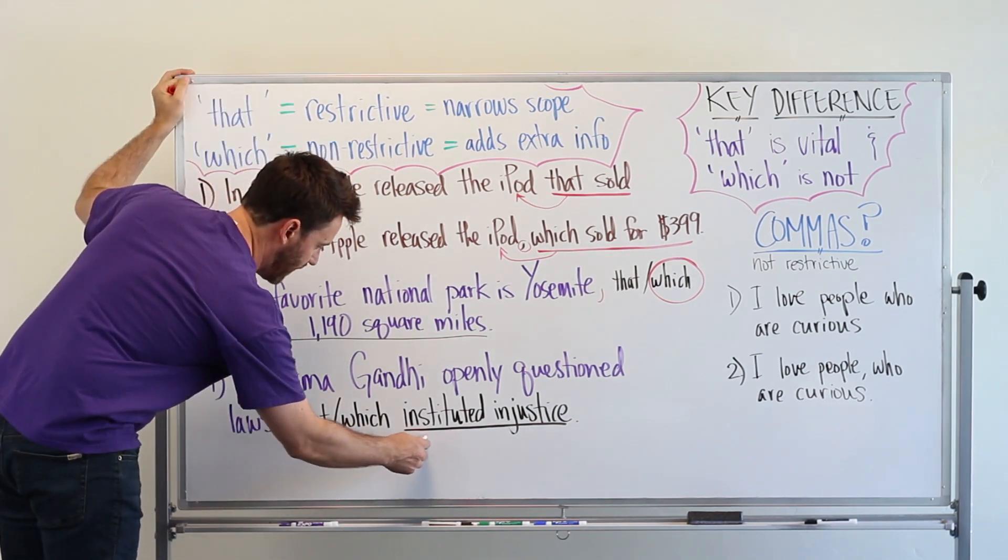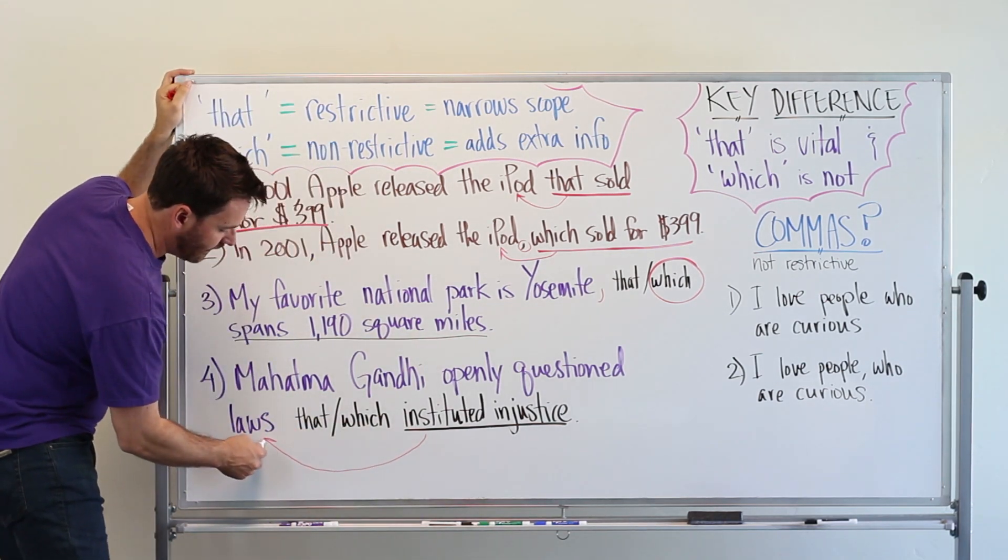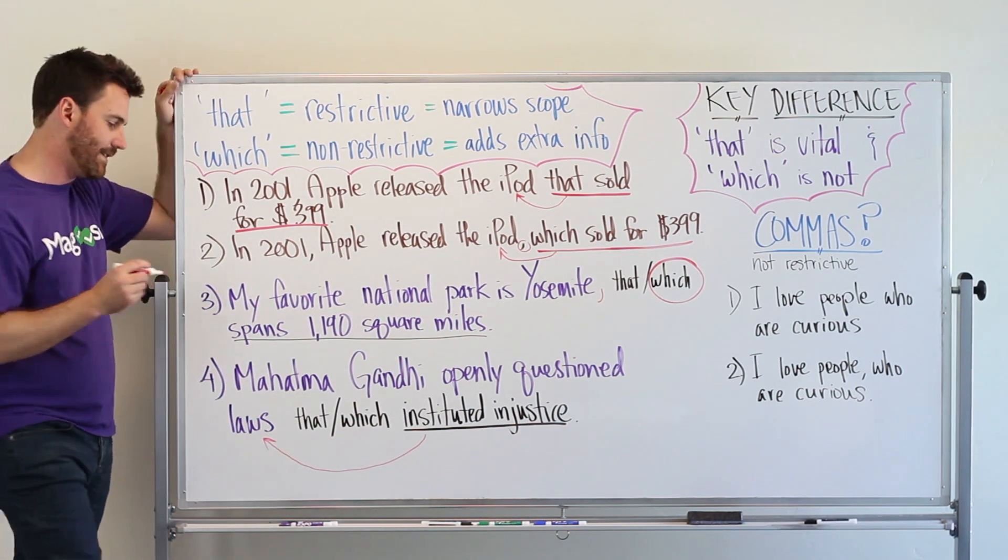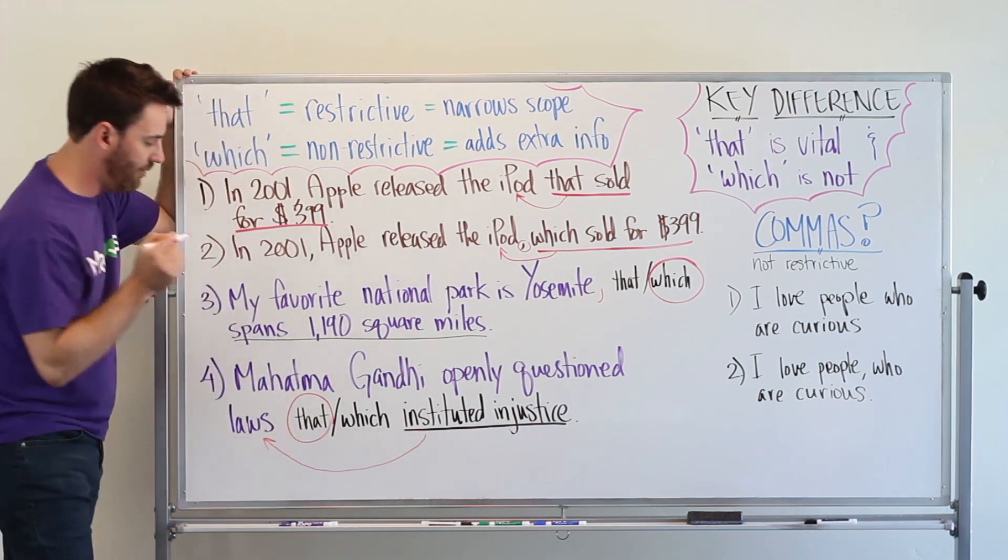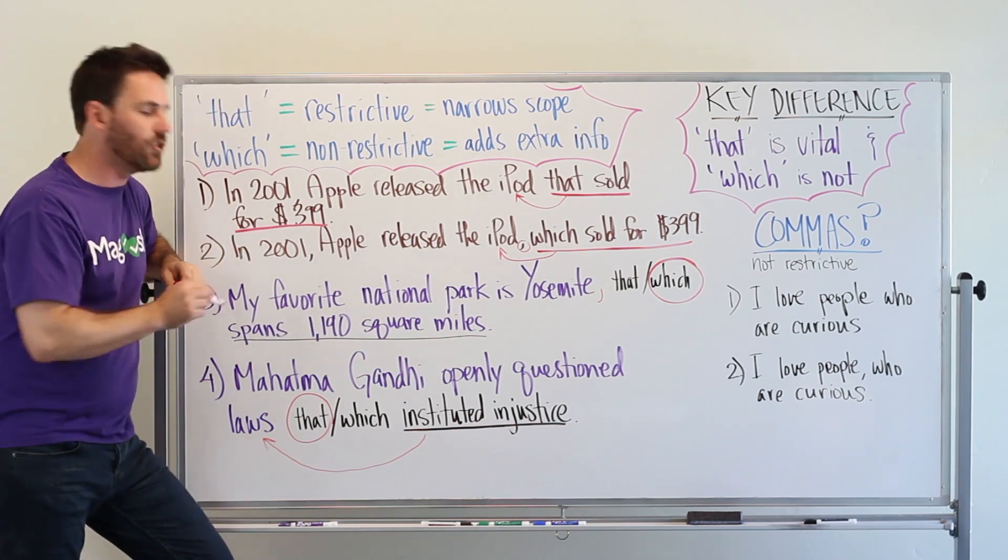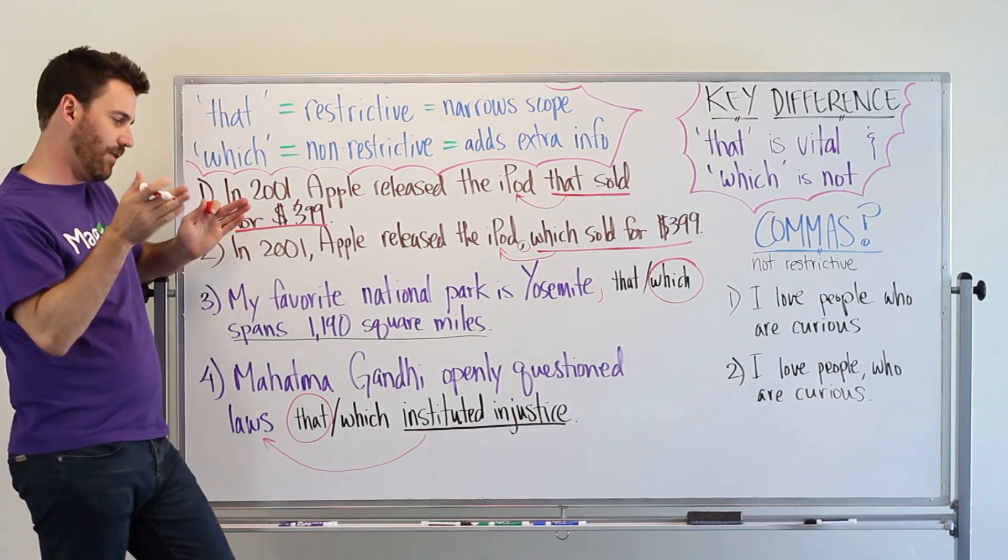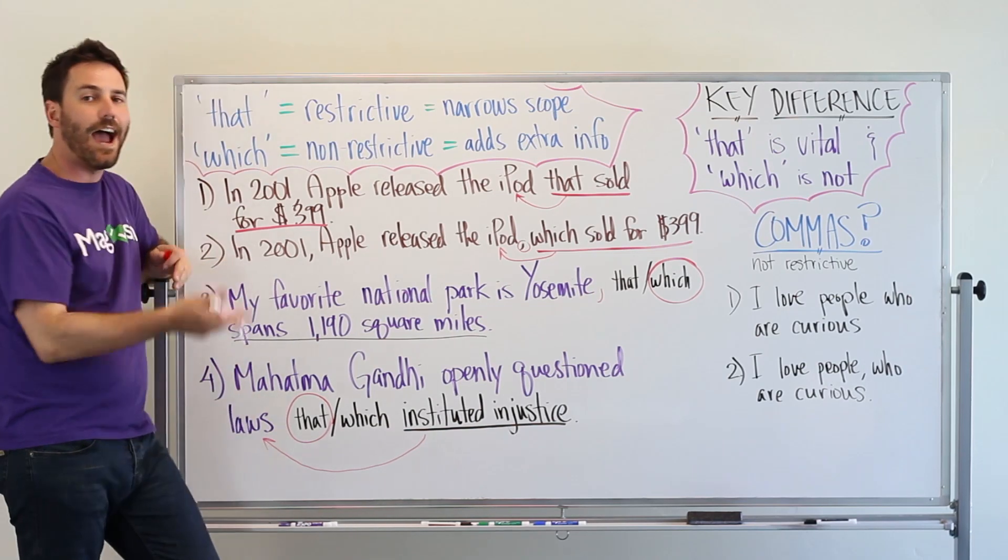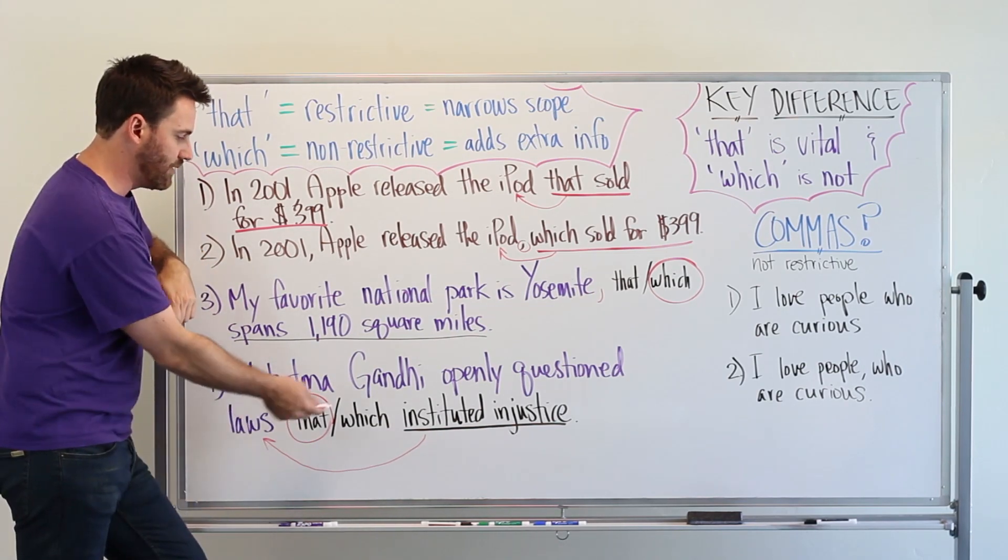So this phrase, all of this that's modifying laws, is essential for the meaning of the sentence. So we would choose that. Mahatma Gandhi openly questioned laws that instituted injustice. So we've narrowed the scope of what type of laws we're talking about by using that.